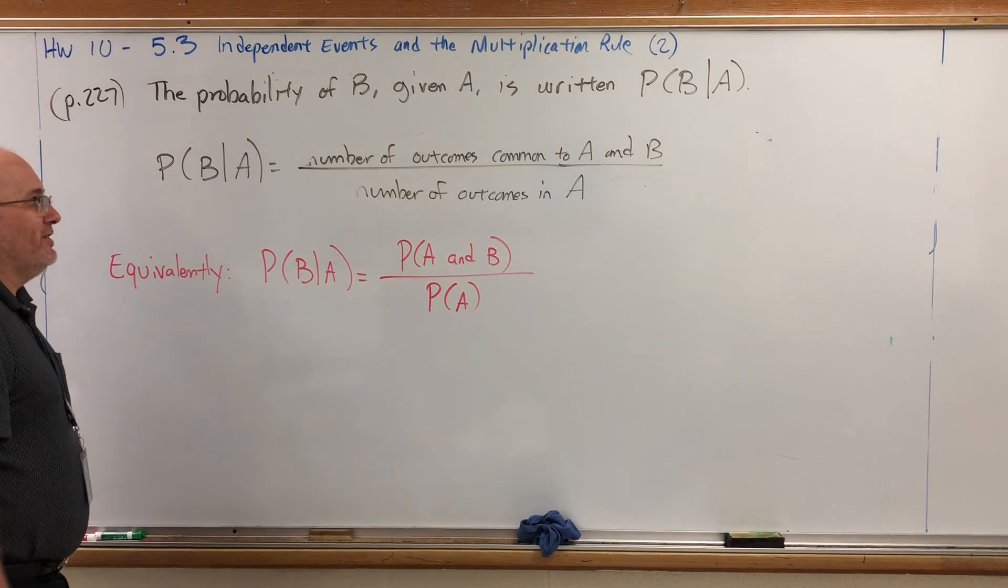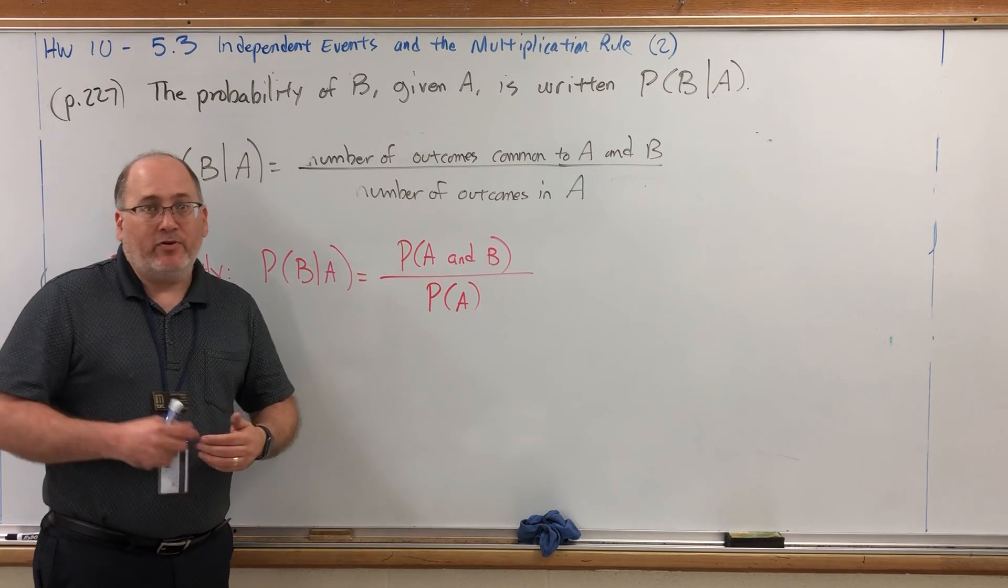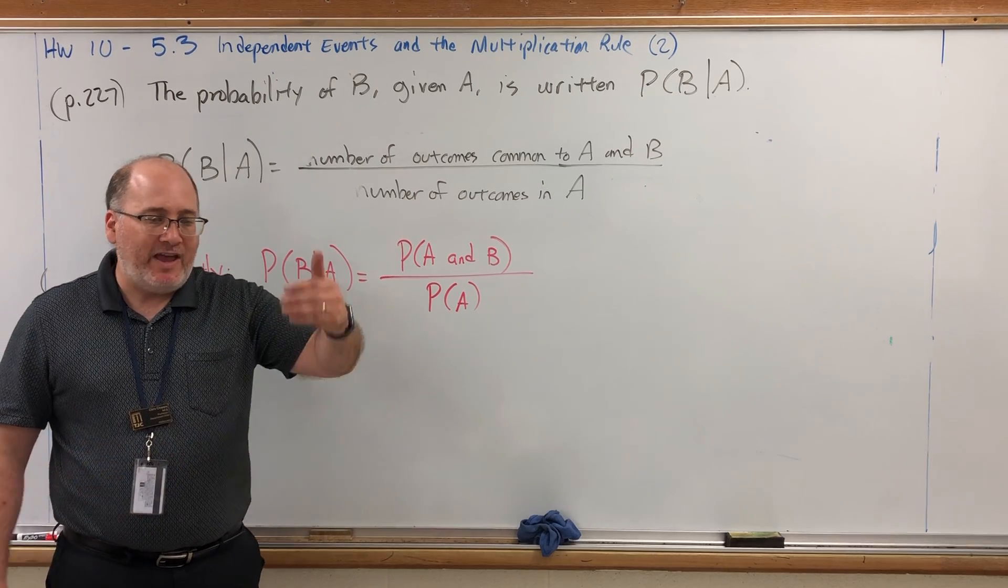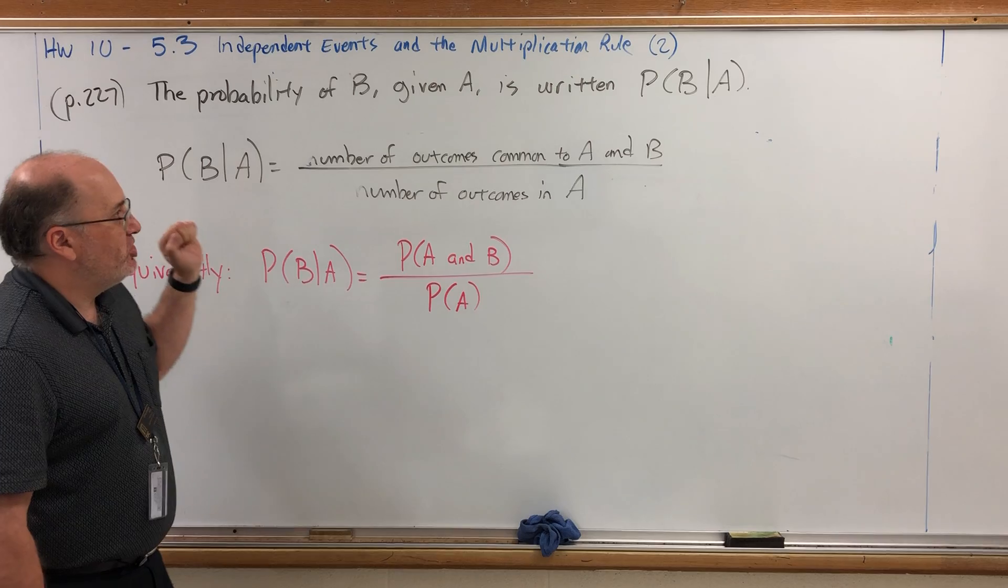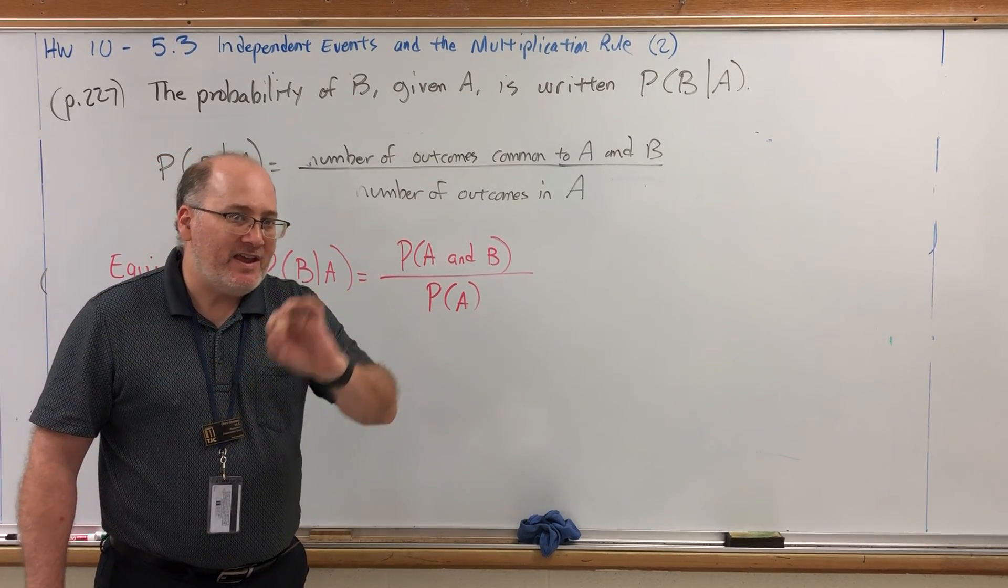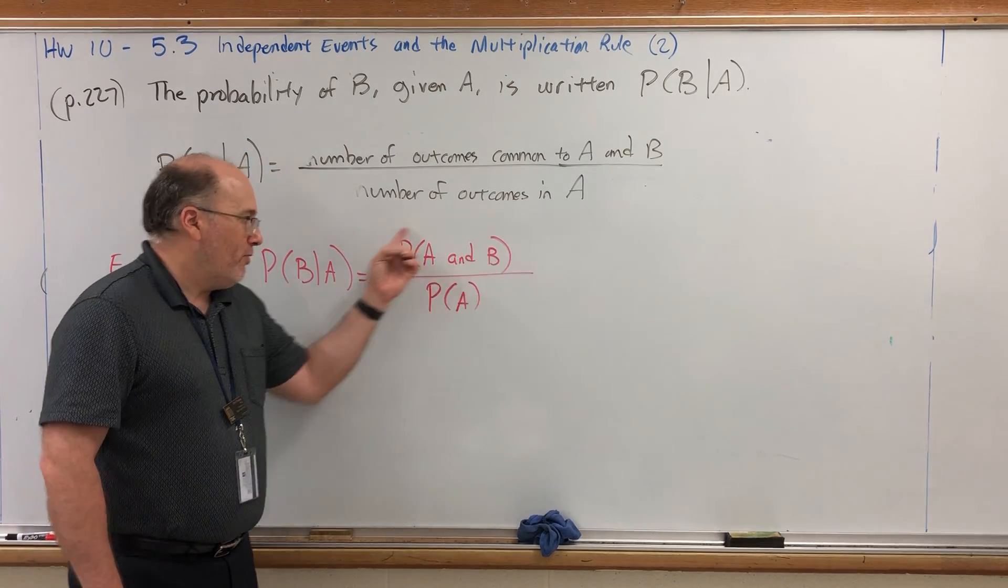Look more closely at this and remember what we're attempting to do in this section. In the previous section, we had a rule called the addition rule, which is a rule for the probability of A or B. The goal of this section is to come up with what's called the multiplication rule, a rule for the probability of A and B. Is this not what we're looking for?